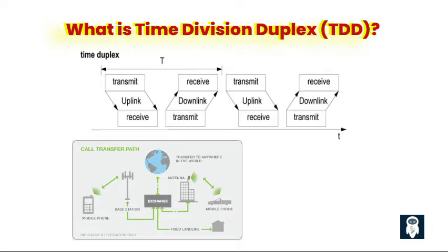In systems with centralized control, such as cellular networks, a base station or access point coordinates the transmission schedules of multiple devices, ensuring that each device receives its allocated time slots for communication. For effective time duplexing, precise timing synchronization is crucial. All devices participating in the communication must be synchronized to a common time reference to ensure proper switching between uplink and downlink transmissions. Synchronization can be achieved through various mechanisms, such as synchronization signals broadcasted by the base station or through synchronization protocols.